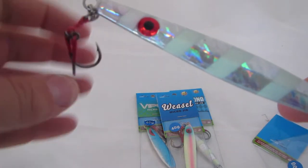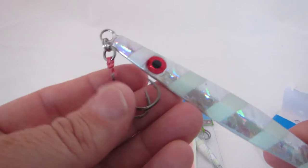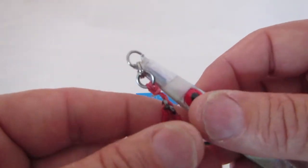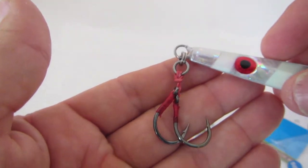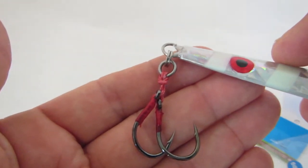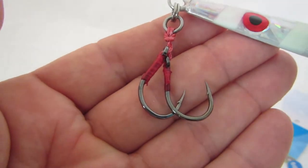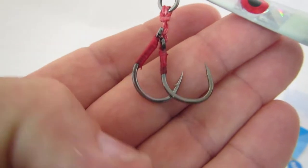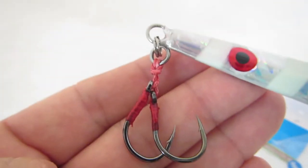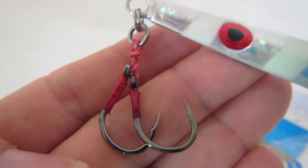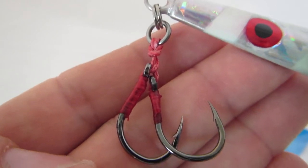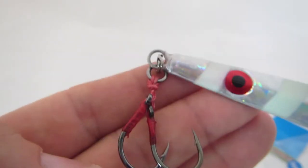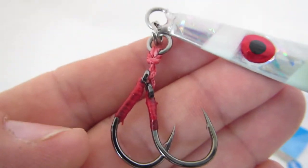First thing you'll notice is, let's have a look at the hooks. We use two hooks on all our microjigs because it kind of makes sense to us. Two hooks, two points, more hookups. One hook falls out, the other one could stay in the fish and so you won't get off. So we reckon it's just better to have two hooks rather than one on your microjigs.